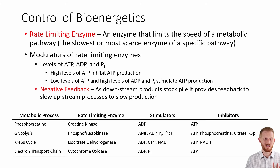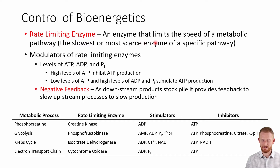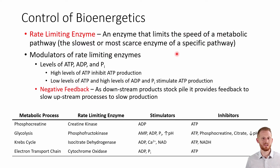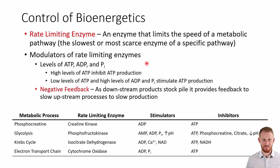Enzymes actually control the rate of bioenergetics. We have what we call rate-limiting enzymes — these are the enzymes in each bioenergetic pathway that are going to be either the slowest or the most scarce, meaning there's not enough of them to go around to make the pathway go quickly. Whichever is the slowest or most scarce enzyme is typically going to be your rate-limiting enzyme, and it controls how quickly that pathway moves forward. If you were to improve the rate-limiting enzyme, you'd actually speed up the pathway and get more energy out of it.